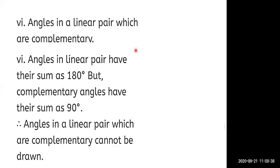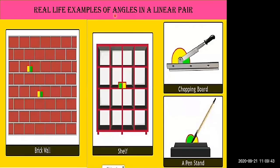Here are real-life examples of angles in a linear pair: arrangement of a brick wall, shelf, chopping board forming a straight line at 180 degrees, and a pen stand with a straight line, common arm, and 180 degree angle.